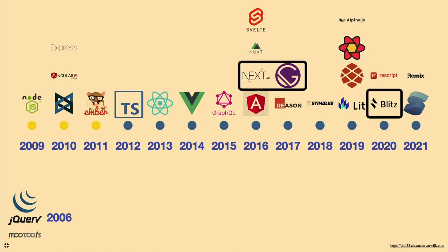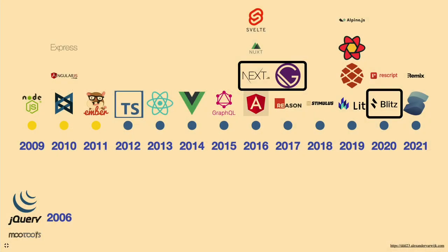I also want to highlight three meta-frameworks in particular for their business model: they have an open-source framework to drive adoption, then offer cloud services for revenue. Gatsby with Gatsby Cloud, Next.js with Vercel's frontend cloud, and Blitz.js pushing Flight Control — a tool providing infrastructure as code on AWS. I think these business models are something we can learn from.